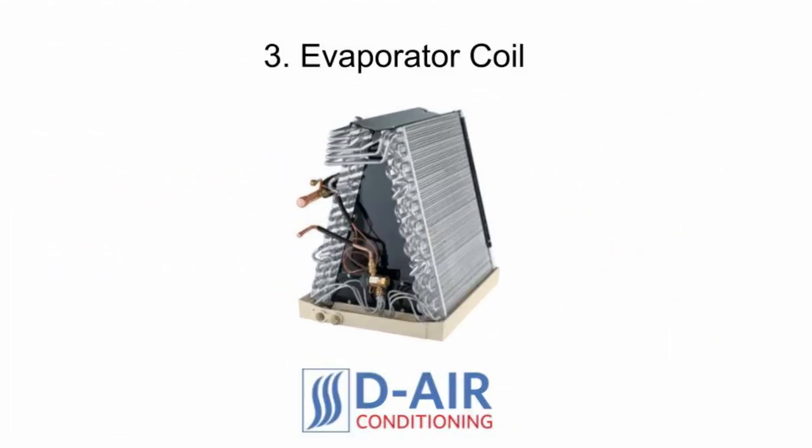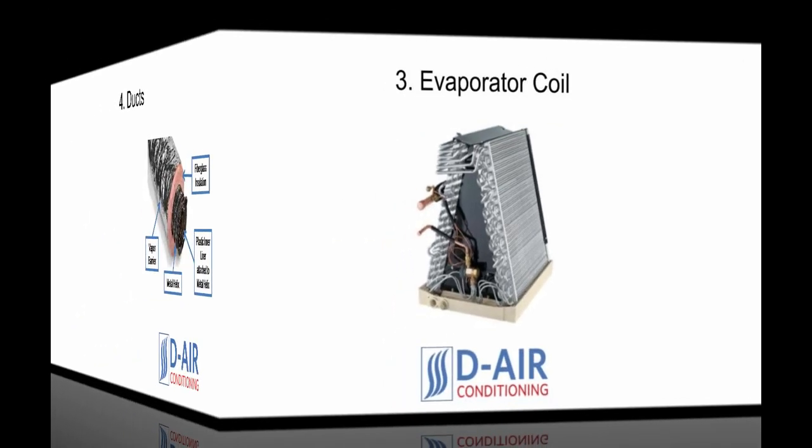3. Evaporator coil. The evaporator coil is the second half of the air conditioner and is placed inside the home. The coil is typically attached to a furnace in order to take advantage of the furnace's blower. For the AC to work, refrigerant must flow between the coil and the condenser. This cycle allows for heat to be pumped outside the home and leads to a decrease in indoor temperatures.